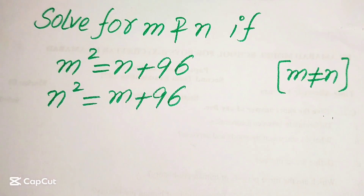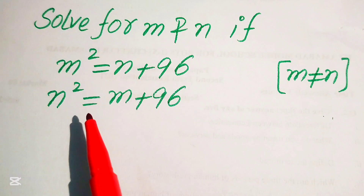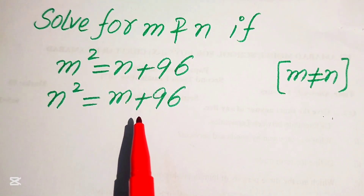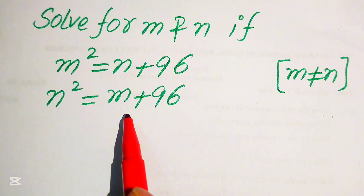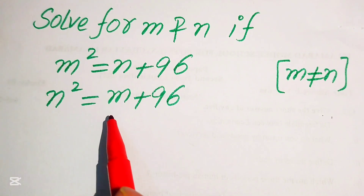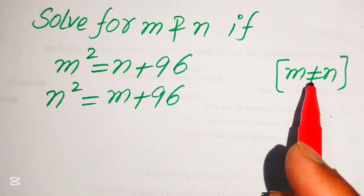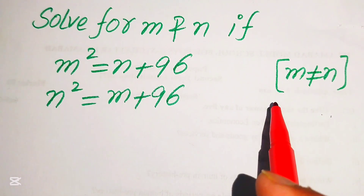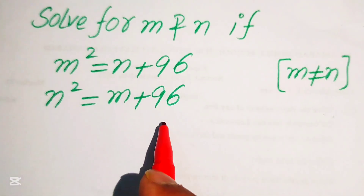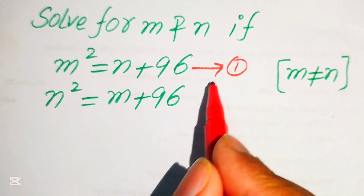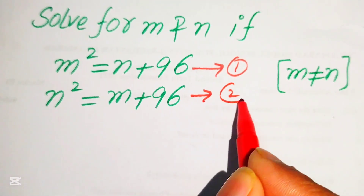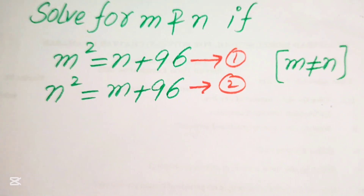Hello everyone, welcome. We solve this nice algebra problem where m² = n + 96 (equation 1) and n² = m + 96 (equation 2). We solve this problem for the distinct values of m and n, because m is not equal to n.